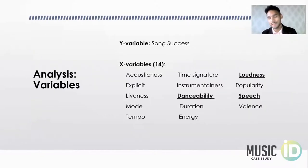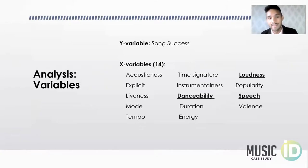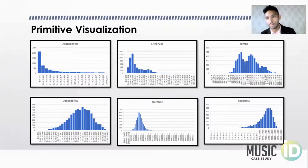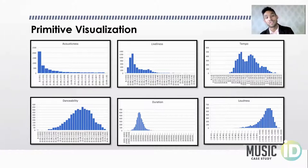What we have here is our analysis variables. Our Y variable is song success, followed by our X variables given to us by the Spotify API. Within these charts, we can see the density — how concentrated specific X variables are in predicting our Y variable, whether or not a song is going to end up on the Billboard Hot 100. Acousticness is very skewed to the left and loudness is very skewed to the right.